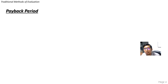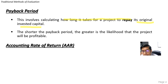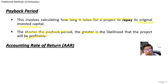In this video, I'm going to explain the theory behind payback period and also accounting rate of return before we look at how to calculate it. For payback period, it involves calculating how long it takes for a project to repay its original invested capital. We are looking at how long it takes to get back our money — for example, if you invest 5 million, how long it takes to get back your 5 million. The shorter the payback period, the greater the likelihood that the project will be profitable.